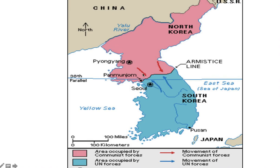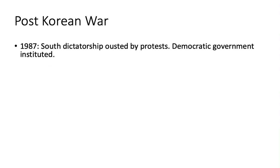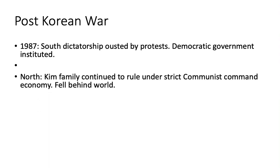The map shows the Yalu River up north — the Americans had pushed the North Koreans pretty far north before the Chinese stepped in and reversed that. After the Korean War, in 1987, the South Korean dictatorship under Syngman Rhee was ousted by protesters and a democratic government was instituted. To this day, South Korea is democratic and experienced impressive, rapid modernization and growth in wealth. It's now a very wealthy country, home to major world companies like Samsung.